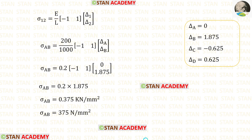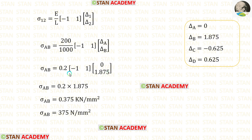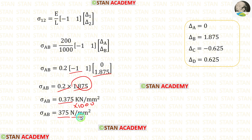Now we are going to find the stresses using this formula. First let us find sigma AB. The length of AB is 1000 and the Young's modulus is 200. We know that in section AA there was no displacement, so delta A is 0. Let us apply delta B which we have found. After multiplying these two matrices and then multiplying by 0.2 and then by 1000, we finally get 375 Newton per millimeter square.